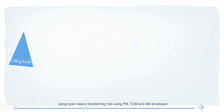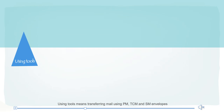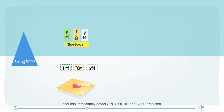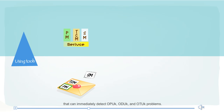Using tools means transferring mail using PM, TCM, and SM envelopes that can immediately detect OPU, ODU, and OTU problems.